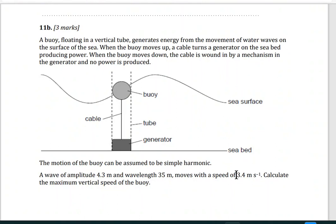So here we have a buoy floating in a vertical tube. This one is floating in simple harmonic motion, up and down in a tube, and it's connected to a wire that generates electricity. When the buoy moves up, a cable turns a generator on the seabed producing power.